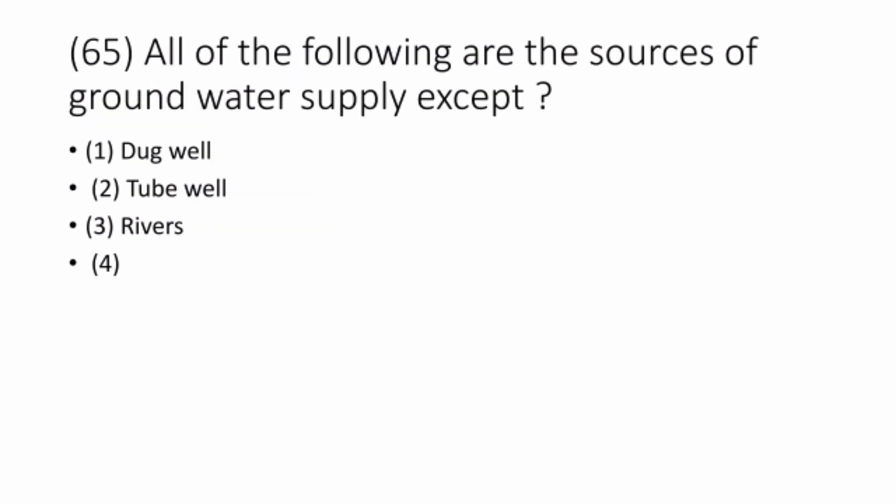Question 65. All of the following are sources of ground water supply except rivers. Option 3 is the correct answer.